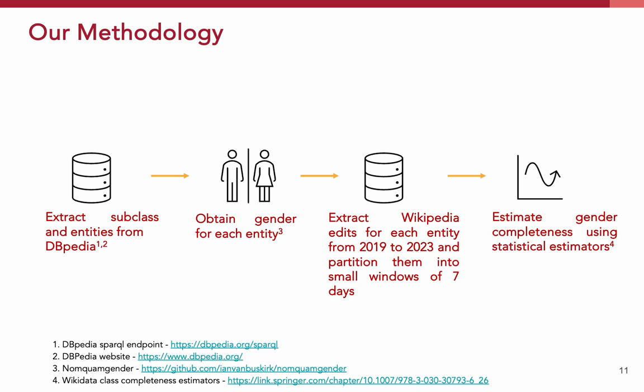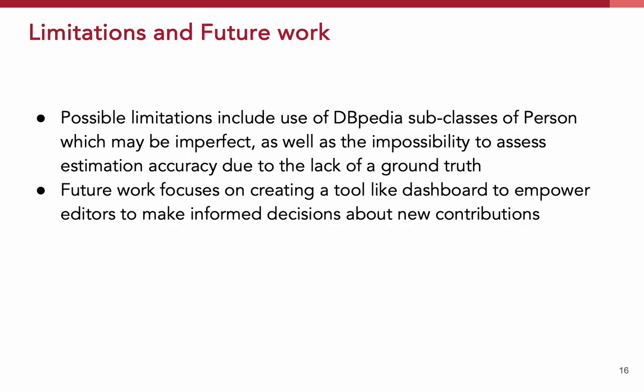While our estimators showed high convergence, there were some limitations. First, it includes the use of DBpedia subclasses of the class person, which may not be comprehensive, and we also had some API-related limitations in terms of data retrieval. Secondly, despite the higher convergence value, lack of ground truth made it difficult to assess the accuracy of the statistical estimators. In the future, we want to focus on creating a dashboard tool to show gender completeness. This kind of tool will enable our editors to make informed decisions about new contributions — for example, pausing male astronaut articles for now to catch up with female astronaut articles.